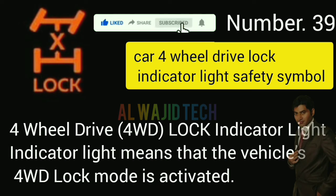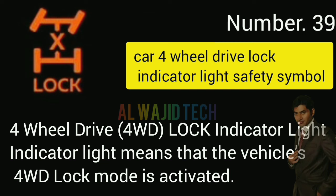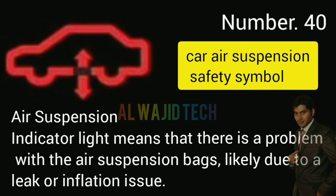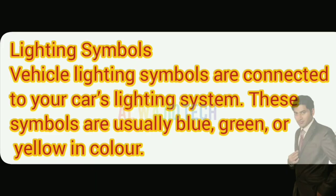Number thirty-nine: Car four-wheel drive lock indicator means that the vehicle's four-wheel drive lock mode is activated. Number forty: Air suspension indicator means that there is a problem with the air suspension bags, likely due to a leak or inflation issue.